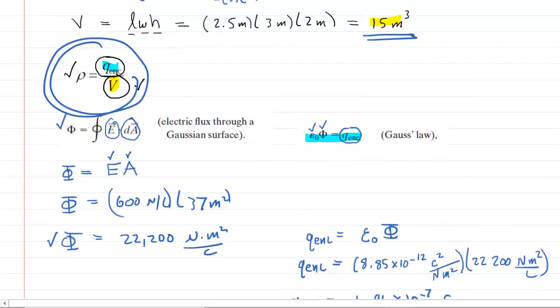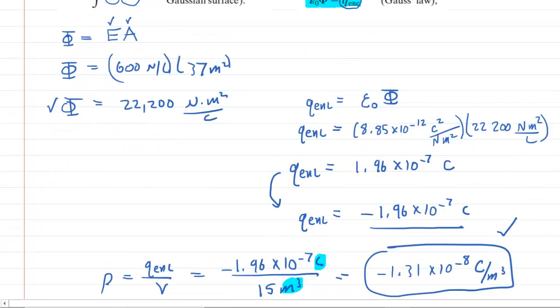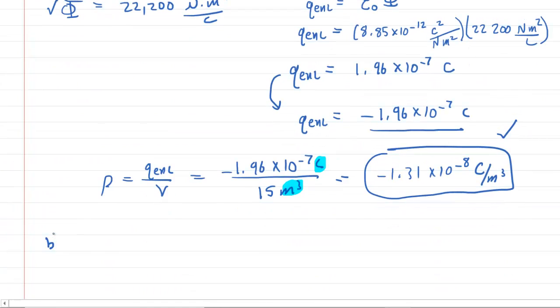We go and look at part B. And this one simply wants the number of excess elementary charges, E, per cubic meter in the room's air. That one's a little weird. As we'll see, it's actually just a dimensional analysis type of question. So we're going to take the answer that we got in part A for the volume charge density. And what we're going to do is basically convert this into the number of elementary charges per cubic meter.